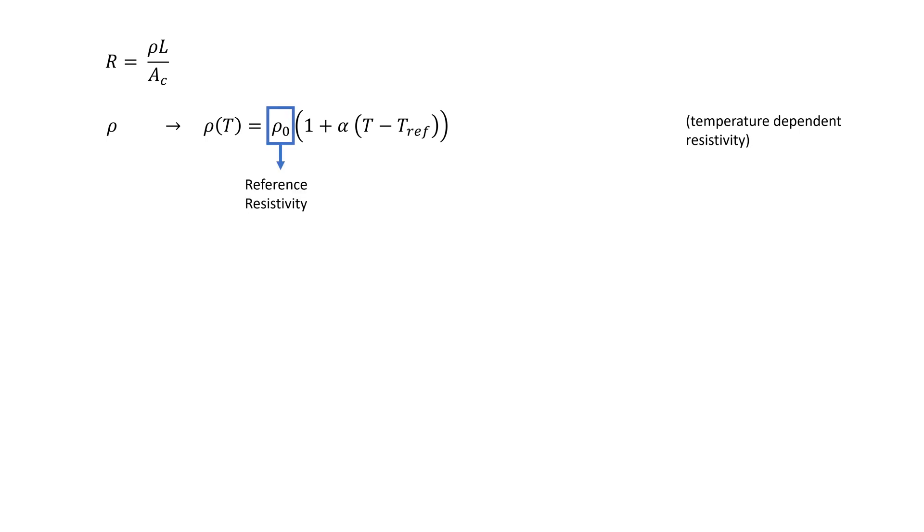The resistivity of the material follows this equation. Here, ρ₀ is the reference resistivity, α is the temperature coefficient of resistivity, T is the temperature of the material, and T_ref is the reference temperature. This reference temperature is fairly close to the room temperature.